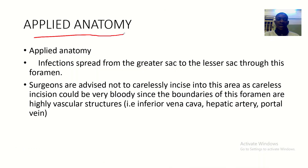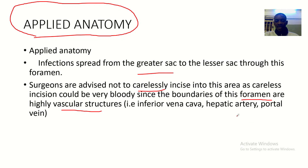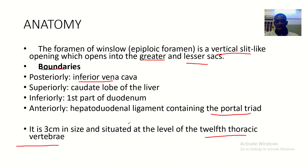For the applied anatomy of the foramen of Winslow: infections spread from the greater sac to the lesser sac through the foramen of Winslow. Surgeons are advised not to carelessly incise into this area, as a careless incision could be very bloody, since the boundaries of this foramen are highly vascular structures.